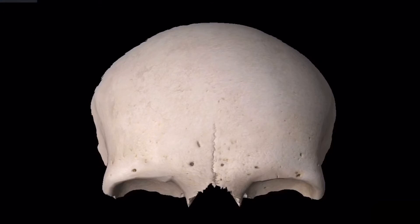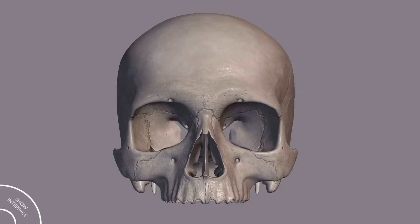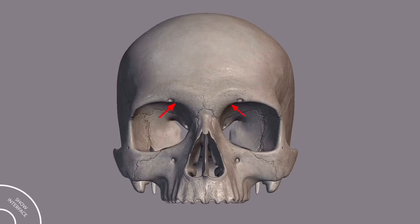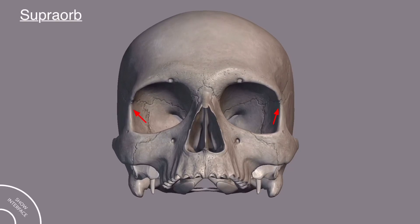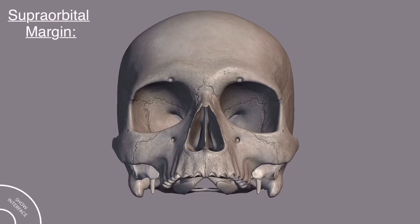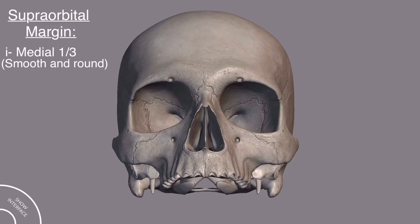Now let's move to a more accurate model. This foramen in the frontal bone is called the supraorbital foramen, and this margin is called the supraorbital margin. The medial one-third of the supraorbital margin, which is medial to the supraorbital foramen, is smooth and round, while the lateral two-thirds of the supraorbital margin, lateral to the supraorbital foramen, is sharp.